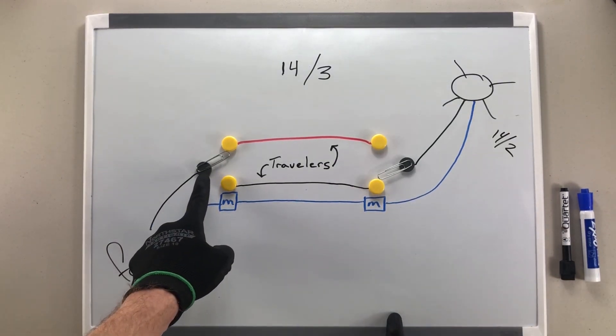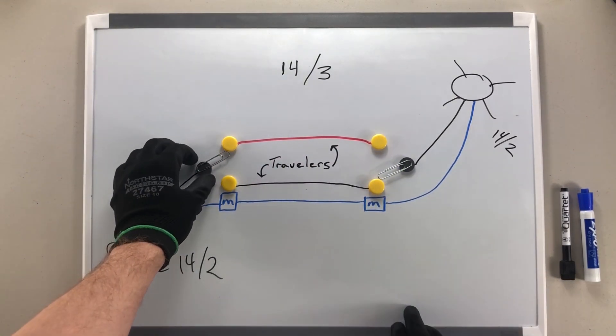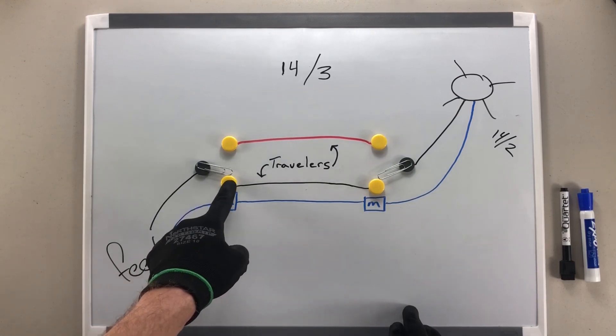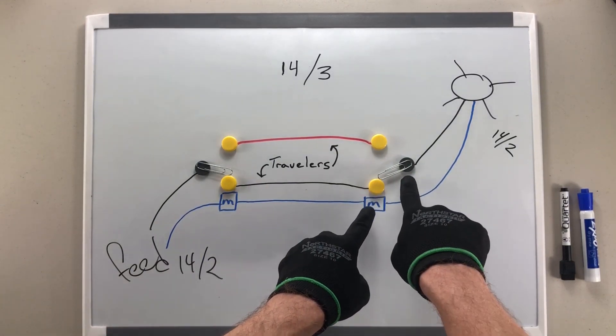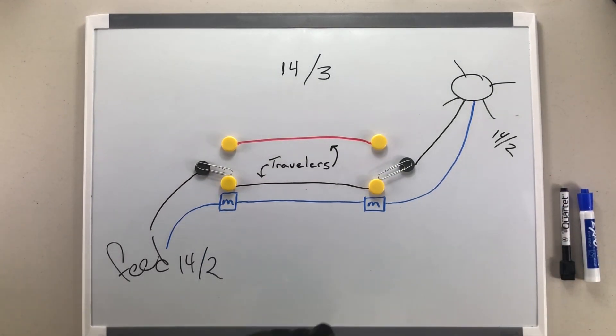Power in through my common, through the traveler. Either one will bridge that connection. If I hit this switch, feed in, common screw, through the traveler, through this common screw to the light, and returns on my neutral connection.